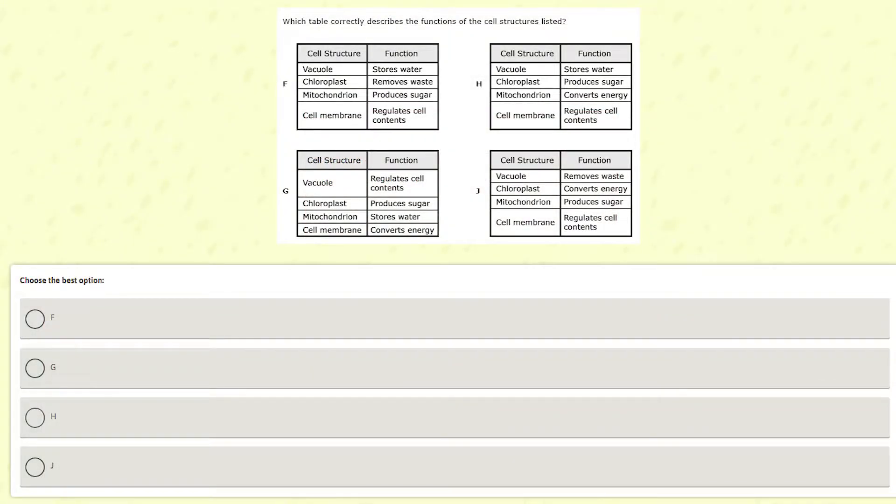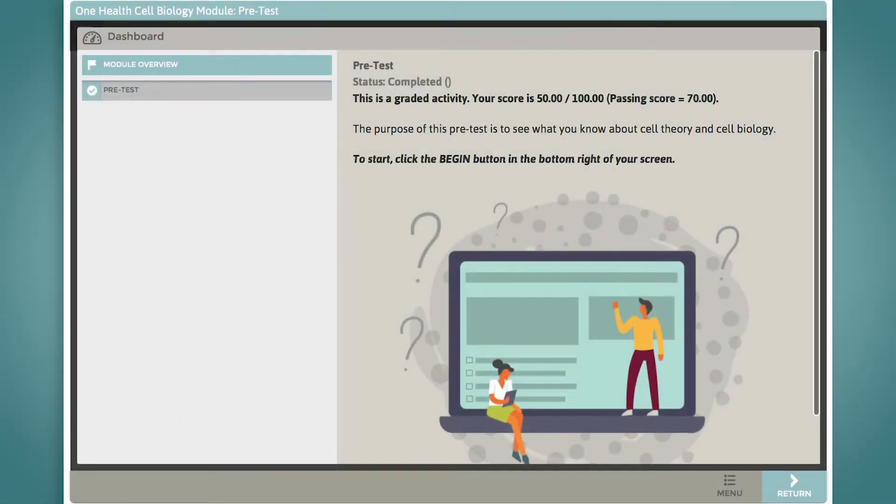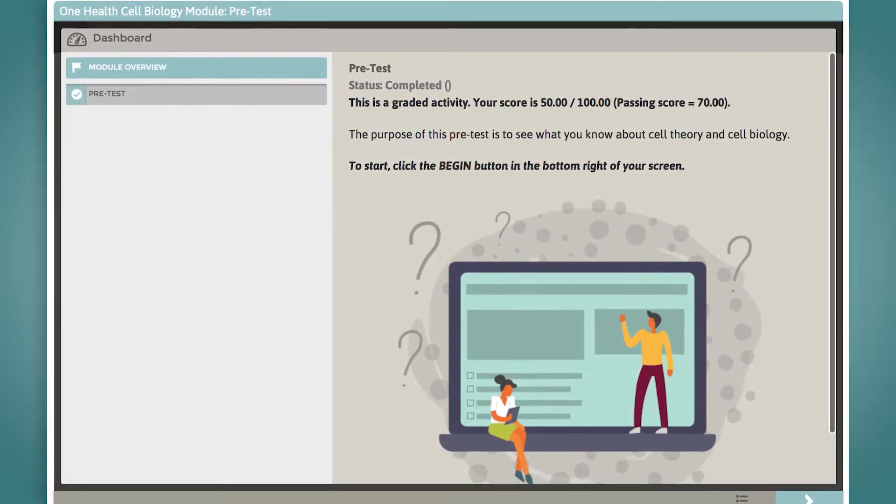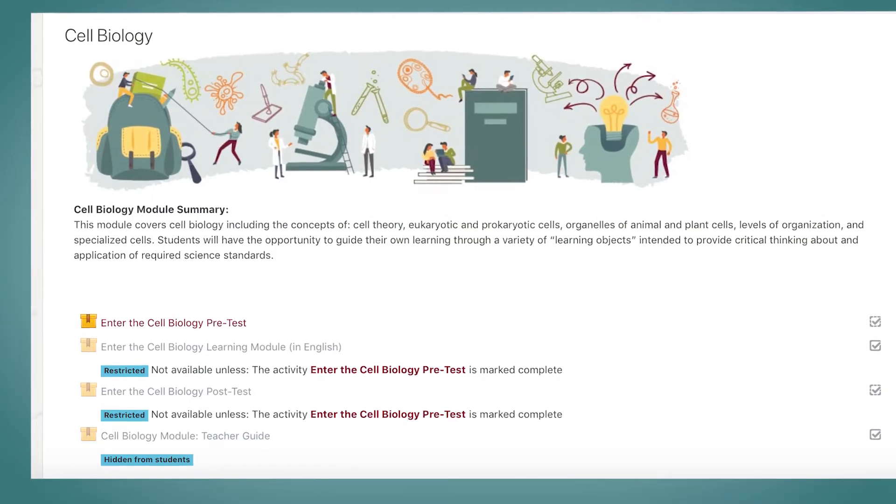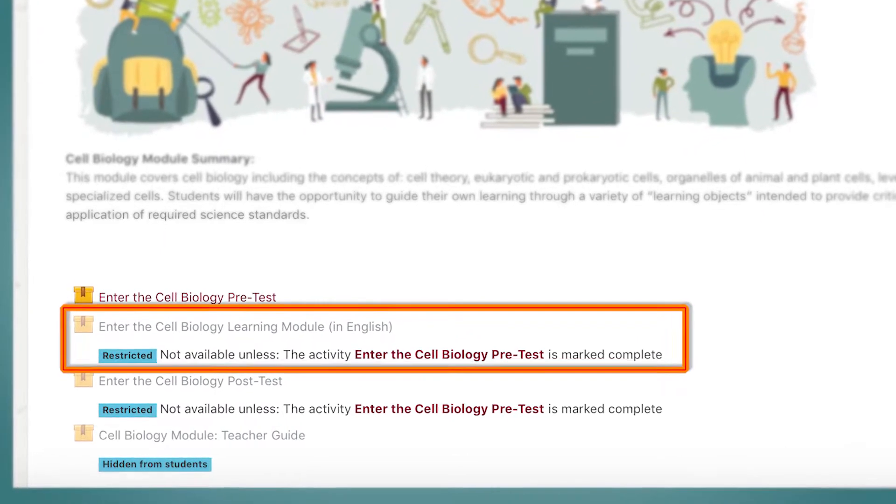Students will not be allowed to move forward to the next question until an answer has been given. After the final question, students will receive a cumulative score for their attempt. Completion of the pre-test is a prerequisite for gaining access to the main learning module and final post test.